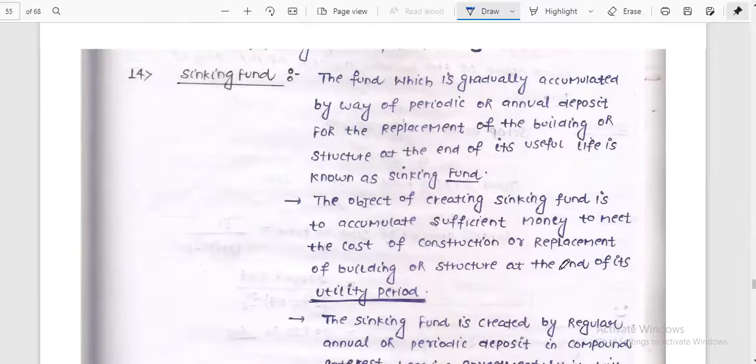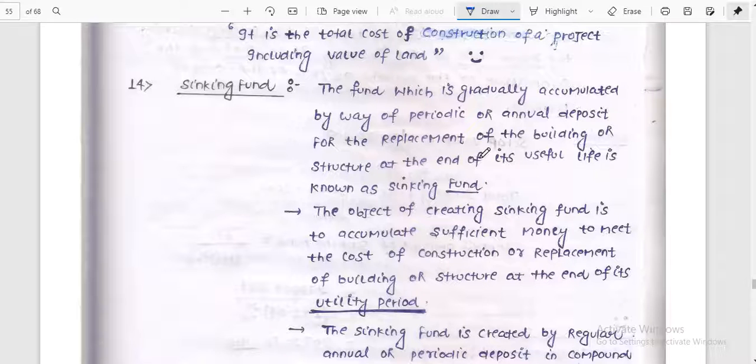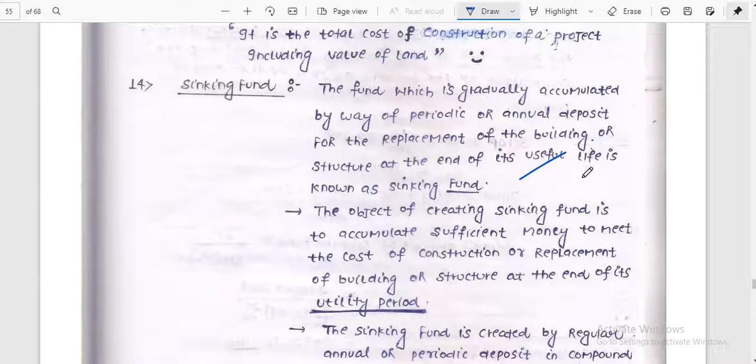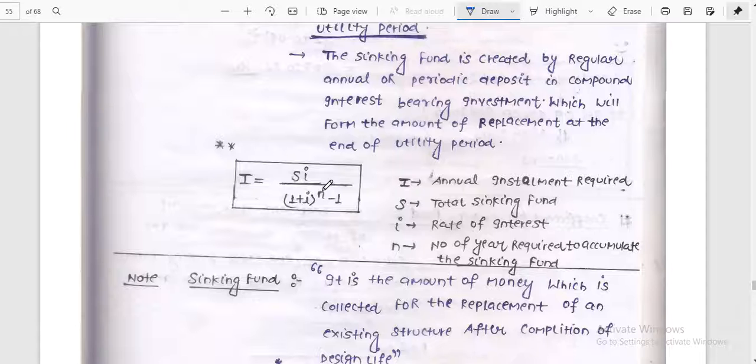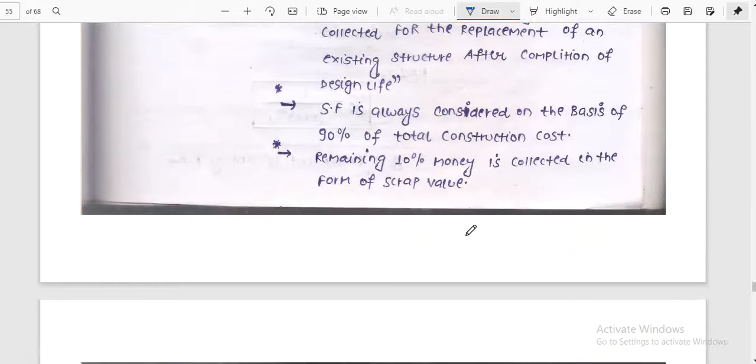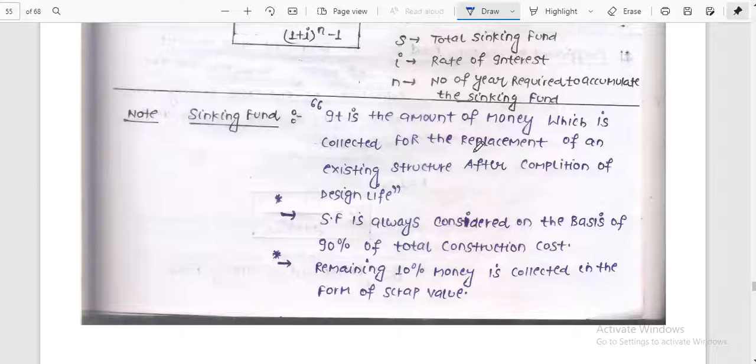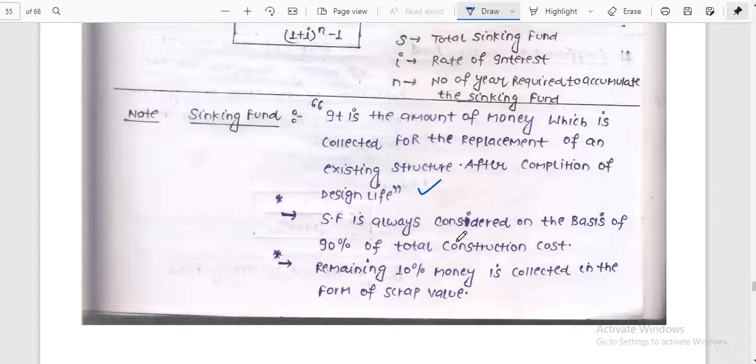Sinking fund is important. The fund which is gradually accumulated by way of periodic or annual deposit for the replacement of the building or structure at the end of its useful life is known as sinking fund. Sinking fund formula is I equals S times i divided by 1 plus i to the power n minus 1, where I is annual installment required, S is the total sinking fund, i is the rate of interest, and n is number of years accumulated in the sinking fund. It is the amount of money which is collected for the replacement of an existing structure after completion of design life. Sinking fund is always considered on the basis of 90 percent total construction cost and remaining 10 percent money is collected in the form of scrap value.